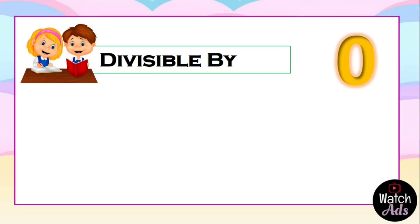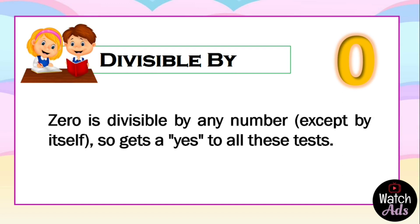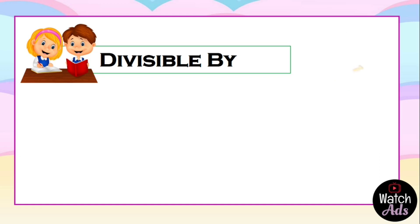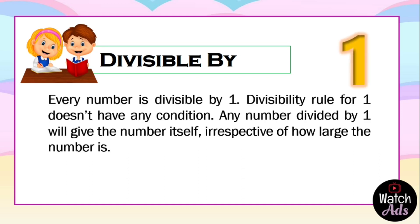The divisibility rule for zero: zero is divisible by any number except by itself, so it gets a yes. The divisibility rule for one states that every number is divisible by one. It doesn't have any condition — any number divided by one will give the number itself, irrespective of how large the number is.